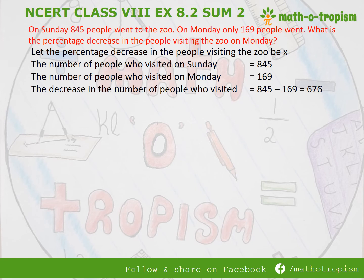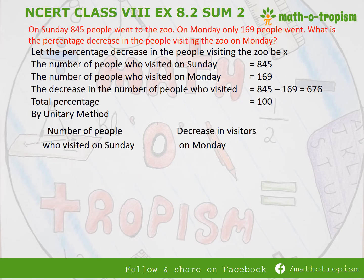The decrease in the number of people who visited on Monday is 845 minus 169, which comes to 676. Now we have the actuals. With respect to percentage, the total percentage is 100 and the percentage decrease is assumed to be x. We now have four quantities. By unitary method, the variables are the number of people who visited on Sunday and the decrease in the number of visitors on Monday. If 845 people visited on Sunday, the decrease is 676.